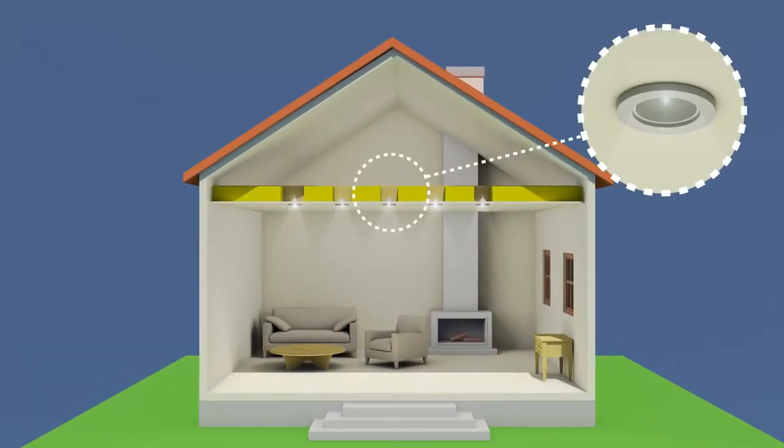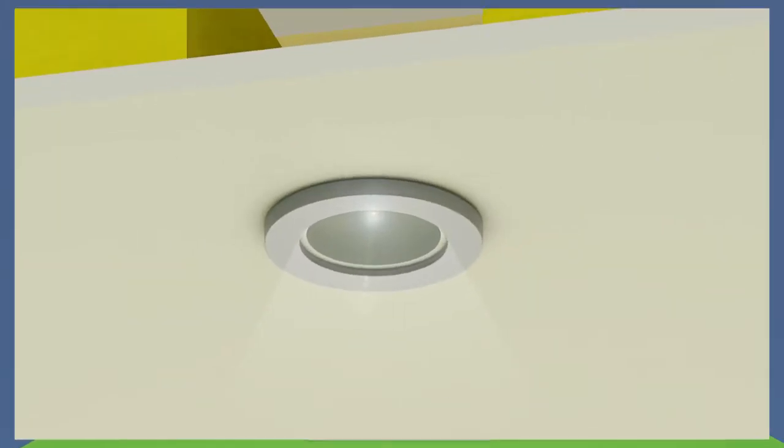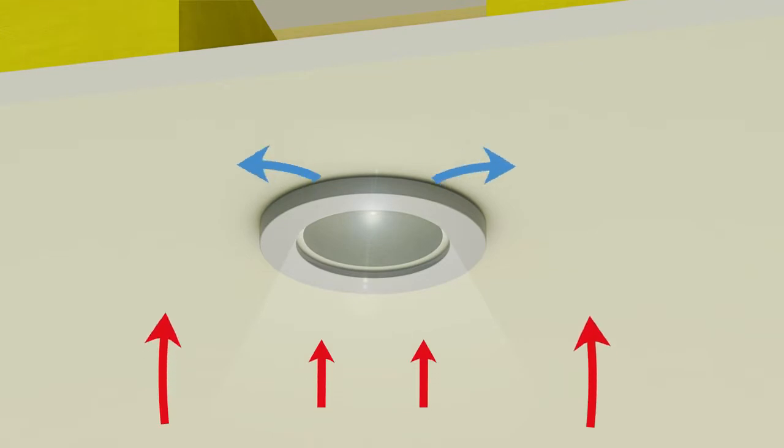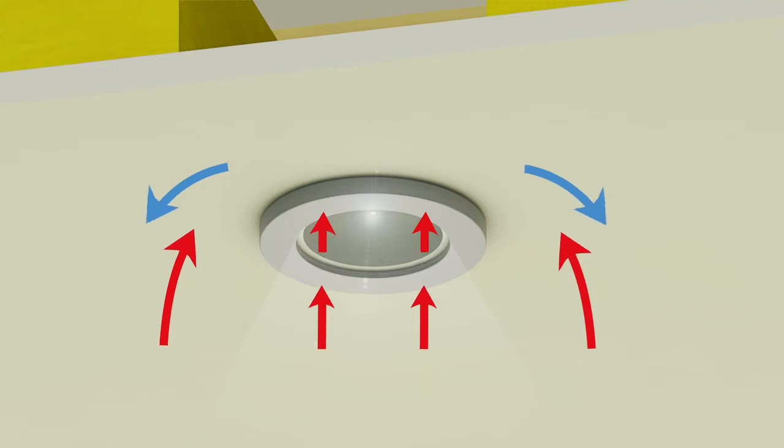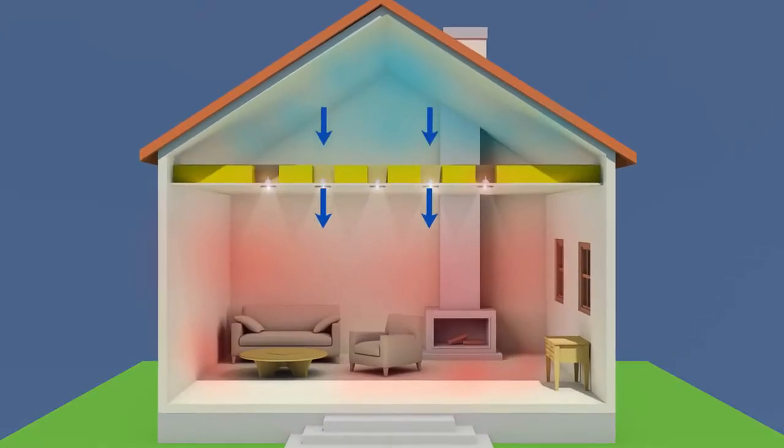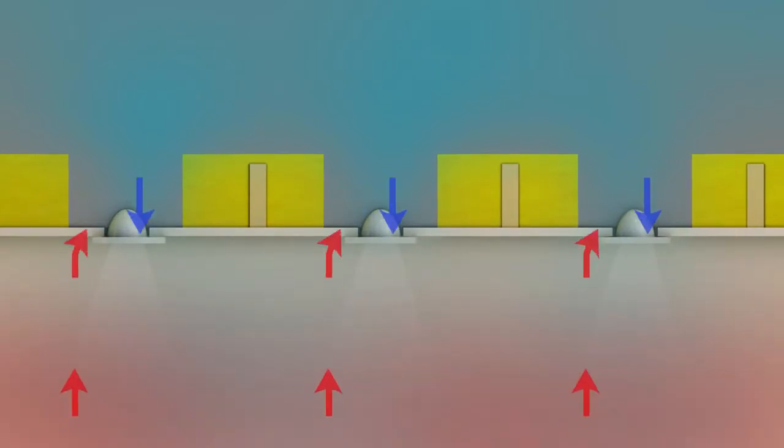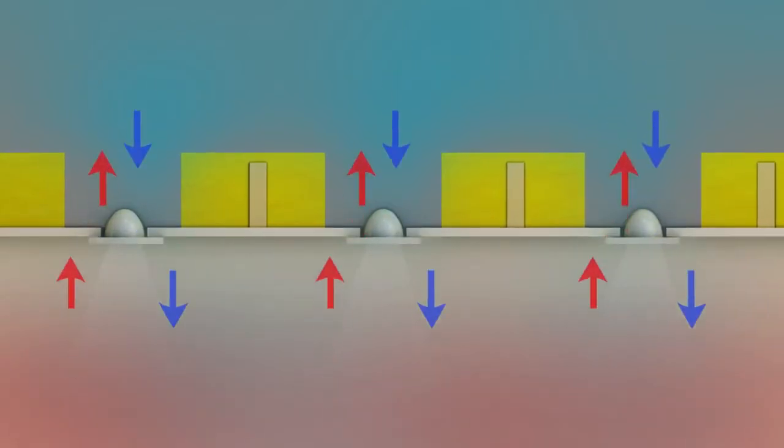Downlights in attic ceilings are a very weak point in the fight against heat loss. Gaps between the light fitting and plasterboard allow warm air to escape and cold air to enter the living room. Therefore the effectiveness of the loft insulation is reduced by up to 30%.